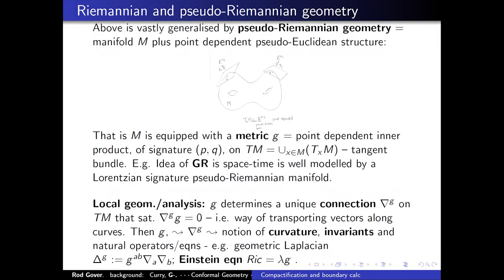This is generalized by pseudo-Riemannian geometry, which starts with a manifold of dimension D where the tangent space at every point is equipped with a pseudo-Euclidean dot product in a point-dependent way — that's what you call a metric, and it can have signature PQ. The idea of general relativity is that spacetime is well modelled by a Lorentzian-signature pseudo-Riemannian manifold; the Einstein equations give you a way of determining the geometry.